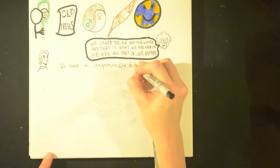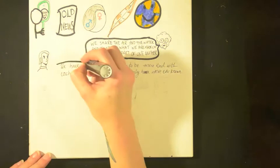Carl Sagan eloquently explains the reality of today by saying that we have a responsibility to be more kind with each other and to preserve and cherish the only home we have ever known.